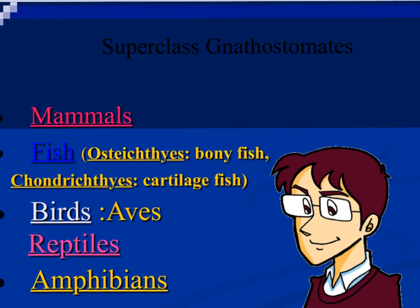Moving toward more specifics with the Gnathostomes, we'll be looking at the fish, birds, reptiles, amphibians, and mammals, spending time with each class — going into detail and showing some incredible characteristics and beautiful designs of these animals as God created them. Looking at the beauty of God's design within the animal kingdom is one of the favorite units to cover, and that's what the next videos will be about.